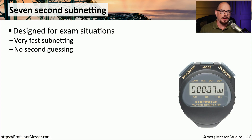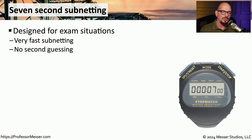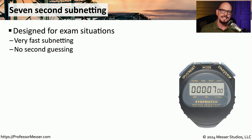In previous videos, we've gone through the process of manually converting an IP address and subnet mask to binary, performing the proper calculations, and converting it back to decimal. We also looked at a shortcut called the magic number method. This shortcut is the seven-second subnetting shortcut, and this is the process I use when calculating subnetting on an exam.